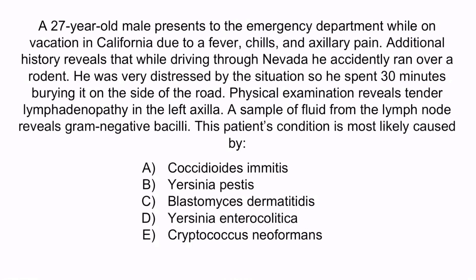A is incorrect — it's true that Coccidioides is commonly present in the southwestern United States and California, however it does not cause buboes. C is also incorrect; Blastomyces dermatitidis is commonly present in the eastern and central United States and does not cause buboes. D is incorrect because Yersinia enterocolitica is transmitted through dog feces, contaminated milk, and pork, and typically presents with gastrointestinal problems. E is incorrect because Cryptococcus neoformans is a fungal infection commonly transmitted through pigeon droppings and presents with neurological findings, not buboes. The correct answer is B, Yersinia pestis.